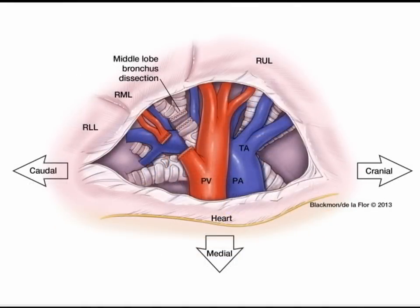Once the pulmonary vein branches have been divided, you should encounter the bronchus going to the right middle lobe. This structure is then encircled, stapled, and divided using a bronchial staple load — with Covidien, a purple load; or with Ethicon, a blue or green load, typically a blue load.